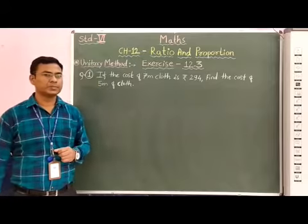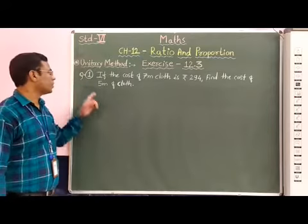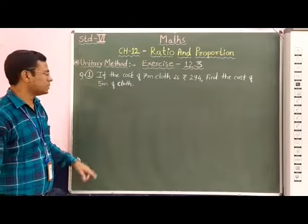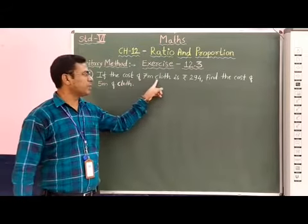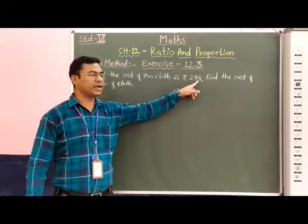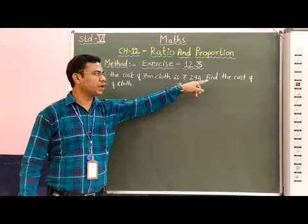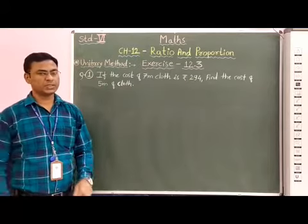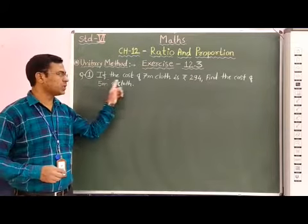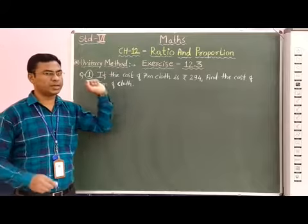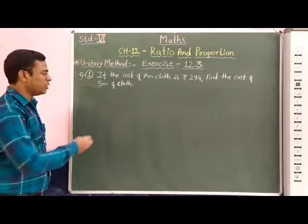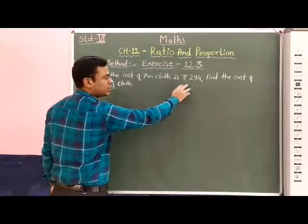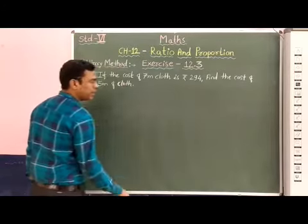Now students, we are going to solve question number 1 of exercise 12.3. The question is: if the cost of 7 meter cloth is rupees 294, find the cost of 5 meter cloth. So first we find out the cost of 1 meter cloth.